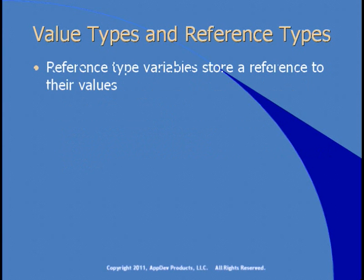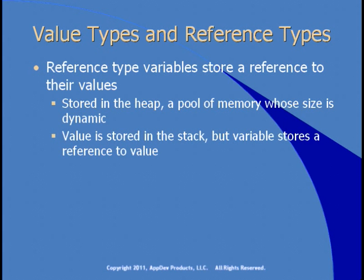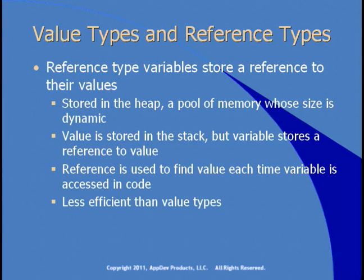The other type of variable is a reference type. The reference type does not store the value — it merely stores a reference to where the value is, and these are stored in the heap, which is a pool of memory whose size is dynamic. If you use a reference type, you're not specifying ahead of time how much memory to reserve for it, so the runtime will allocate memory as needed. The actual value you're storing in a reference type variable is stored in the stack, but the variable itself contains a reference to the value, which is used to find the value each time you reference the variable. This is less efficient than using value types. Reference types include strings, objects, and classes you create.